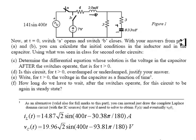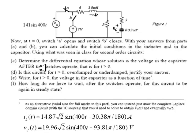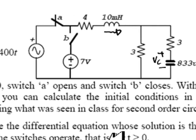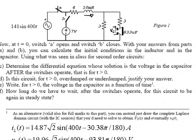With your answers from parts A and B, you can calculate the initial conditions in the inductor and in the capacitor. Using what was seen in class for second order circuits, determine the differential equation whose solution is the voltage in the capacitor. After the switches operate, that is for t greater than 0, this opens and this source is not part of the circuit anymore. This closes, this source is. We solve that circuit. We want the differential equation that has Vc for its solution.